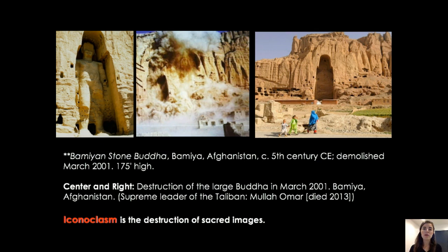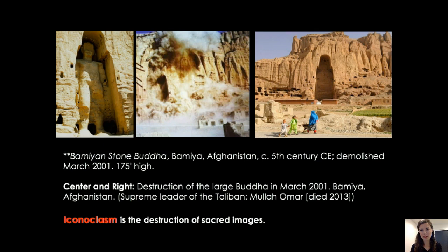The largest of the Buddhas is about 175 feet tall. It was created out of the rock of these cliffs, but then also decorated through ropes and plaster to build up the surface texture. You can see the before, the destruction, and the after. One of the negative effects is that Bamiya was a region of tourism, and now people aren't going to come because there's nothing to see. The Buddhas are no longer there, so the region has lost a lot of money, and many who were involved in or forced to be part of the destruction regret what they did.